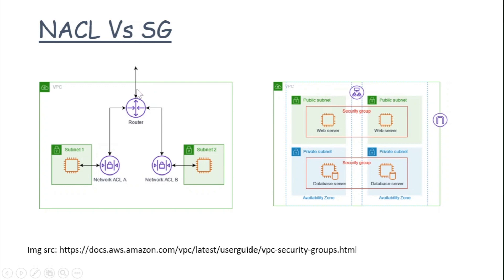Here is a quick diagram that shows the positioning of both. On the left hand side you can see the Network Access Control List, or NACLs, are placed at the subnet level — they control the traffic flow to the subnet. On the other hand, security groups are attached to EC2 instances or ENIs and they control the traffic flow to them.